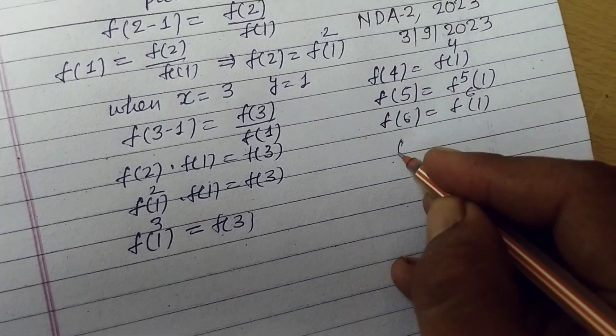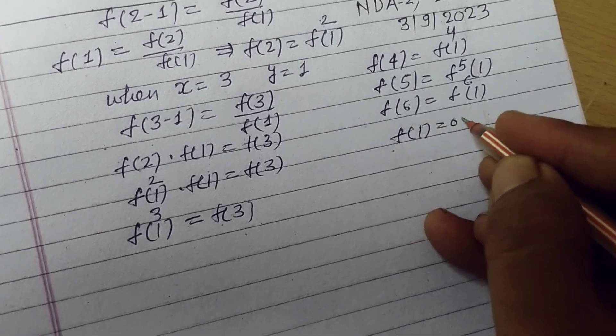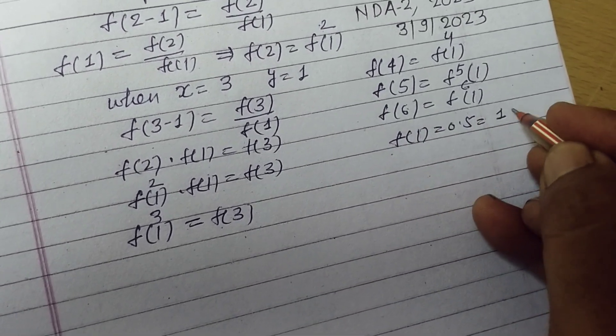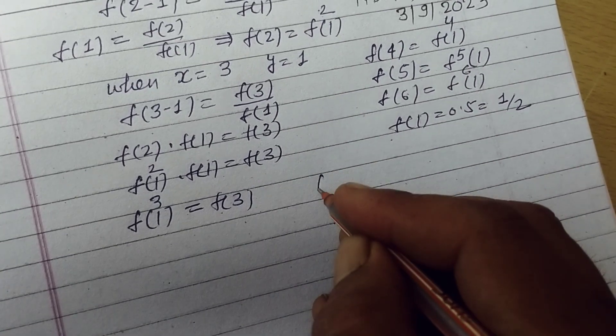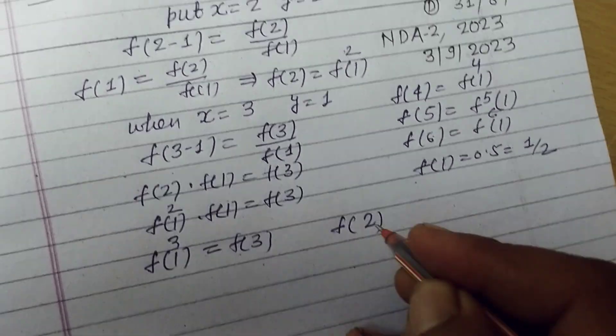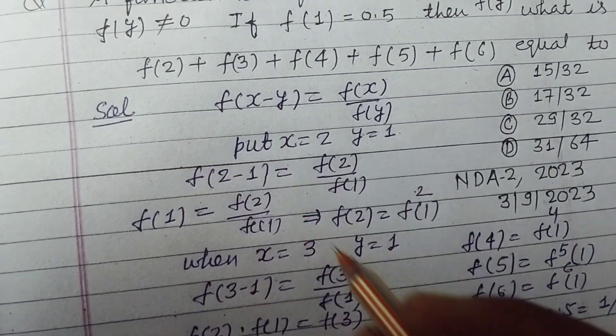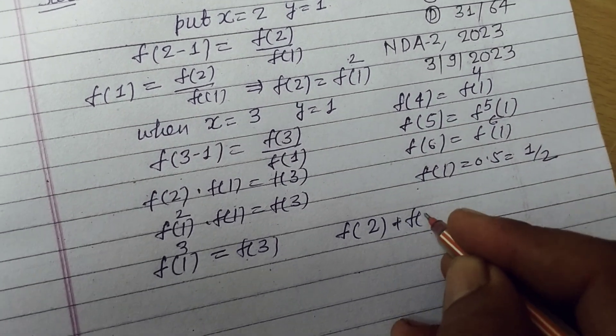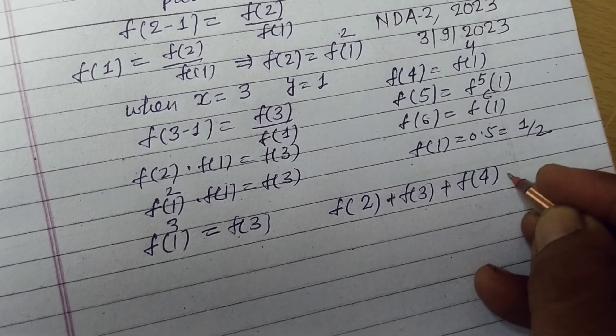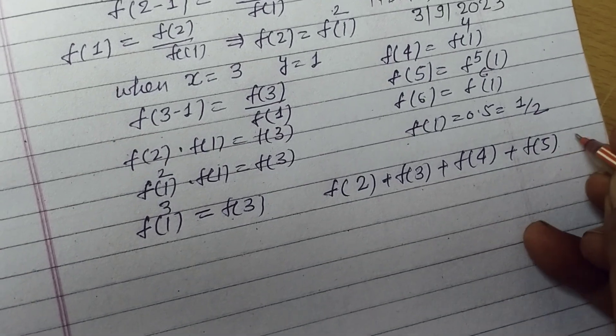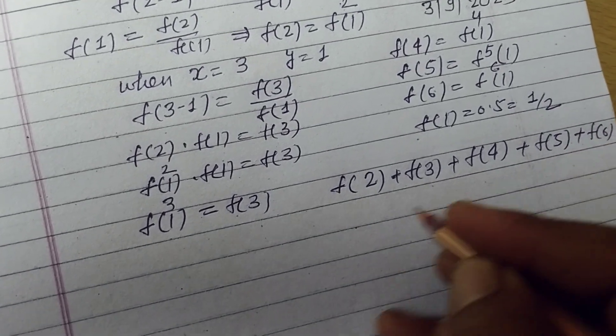So since f(1) is given to us as 0.5 which is 1 by 2, taking f(2) plus f(3) plus f(4) plus f(5) plus f(6).